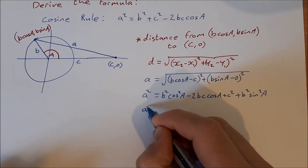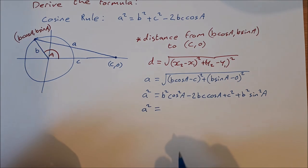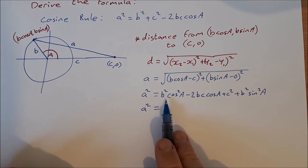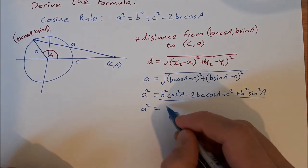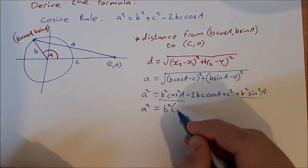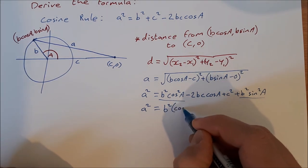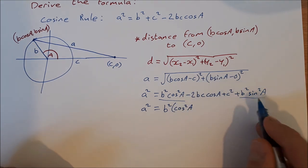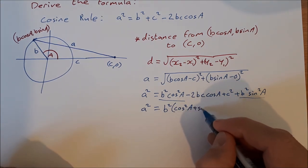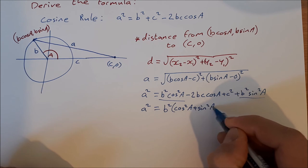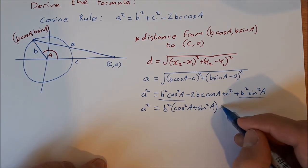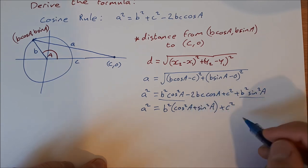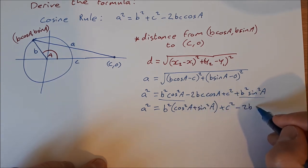Next, I'm going to say a squared is equal to... What I'm going to do is I'm going to factor out the b squared that I have in these two, so I'm going to say b squared times cos squared A plus sin squared A, leave them in the brackets, and then I have plus c squared and I have minus 2bc cos A.